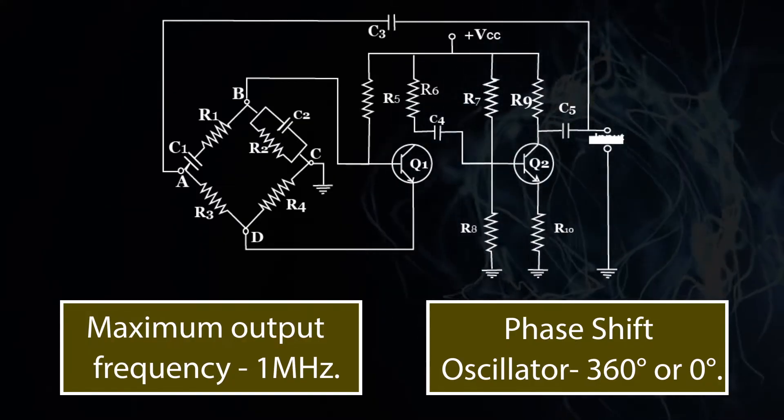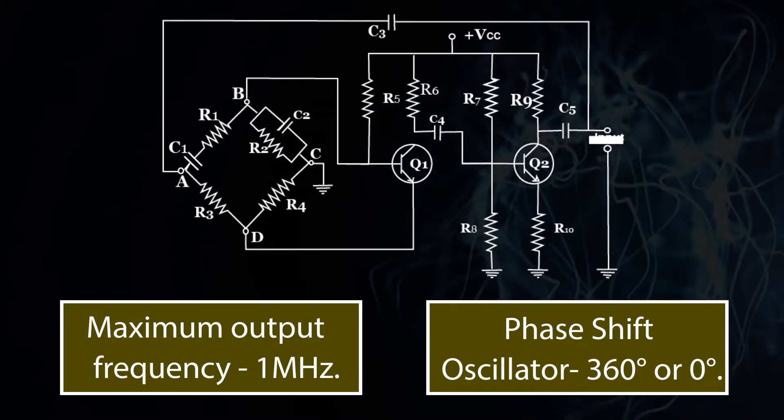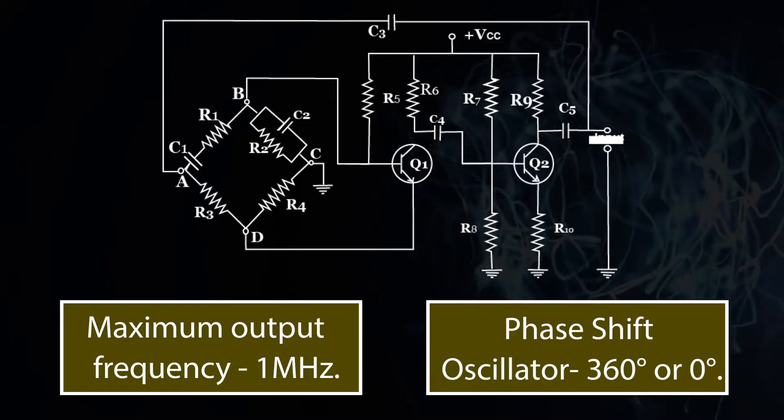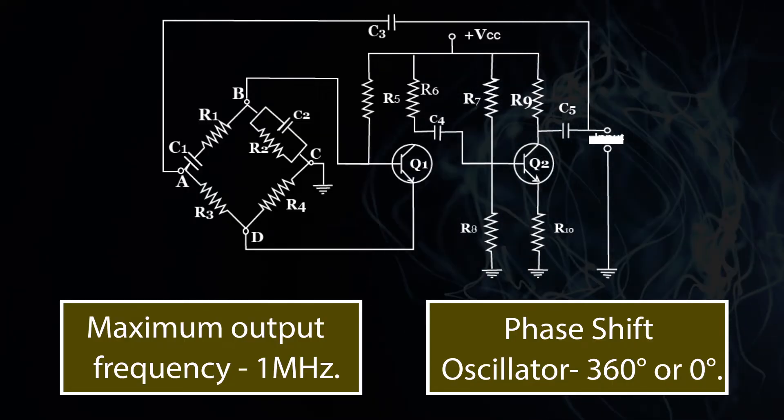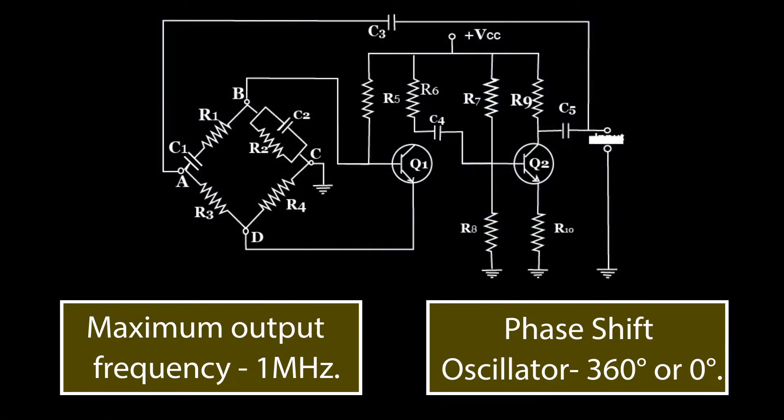Hence, the maximum output frequency of the Wein Bridge Oscillator is 1 MHz and this frequency is from the phase shift oscillator. The total phase shift of the oscillator is 360 degrees or 0 degrees.